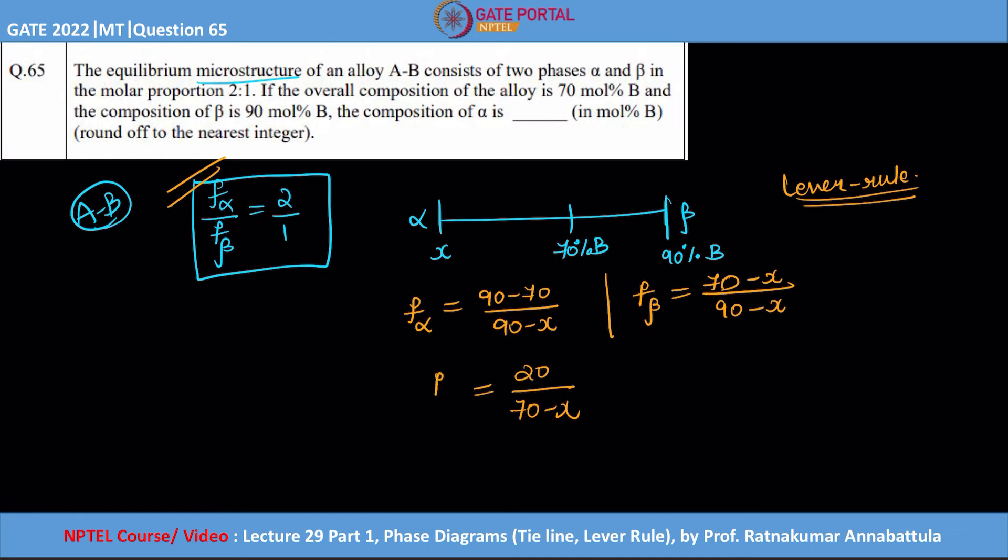I will write this way: F_alpha by F_beta equals this, and from this ratio we have 2. So 20 is equal to 140 minus 2x, and 2x equals 120, so x is equal to 60% of B.